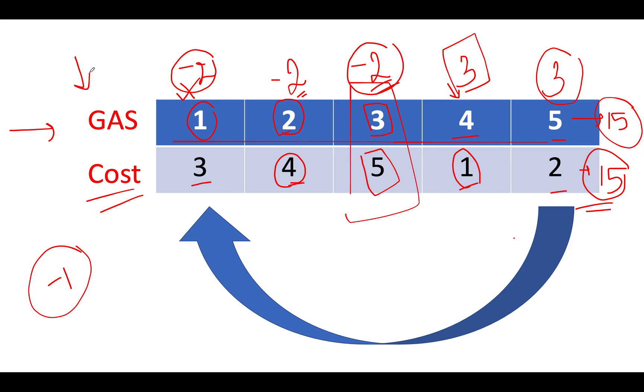So the first and the foremost thing is calculate the total gas value, total cost value. And in case our total cost happens to be greater than total gas, then we return minus 1. If you have understood this property and the one that I previously discussed, where we were calculating the difference between the gas and the cost, then you have understood 90% of the algorithm. Now let's conclude, how can we identify the starting point where we need to start our journey?